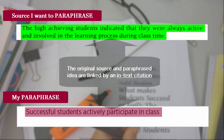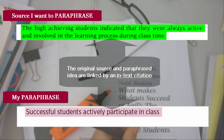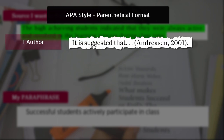You also need to link from the paraphrased idea to the original source using what is called an in-text citation. In APA style, an in-text citation using the parenthetical format begins with the author's name and then the date of publication.